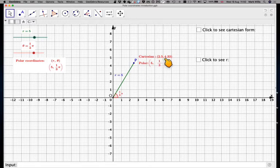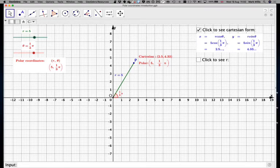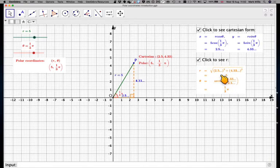At the moment, if I wanted to write this point 2.5, 4.33 in polar form, then I'd have to find the value of r. To find the value of r, this is a simple application of Pythagoras's theorem. So in this case it would be 2.5 squared plus 4.33 squared. These have been rounded off, and that'll give me 5. And the angle would be arctan of this distance divided by this distance, which in this case happens to be π over 3.